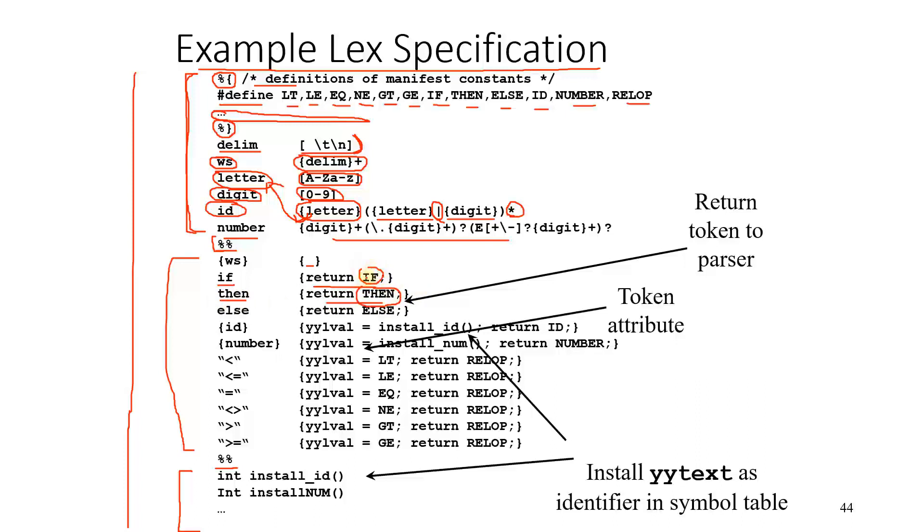If we get then, it returns then. So this token, that is this then or this if, these are tokens which are returned to the parser. The parser is a syntax analyzer. It is written to them, meaning we are breaking these patterns into lexemes like if, then, else, install ID, return ID, all of these.